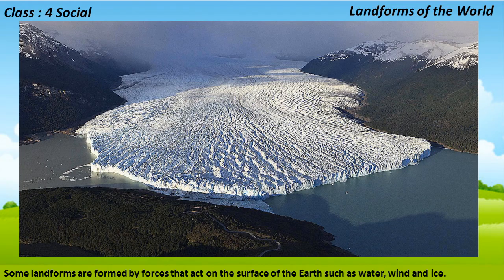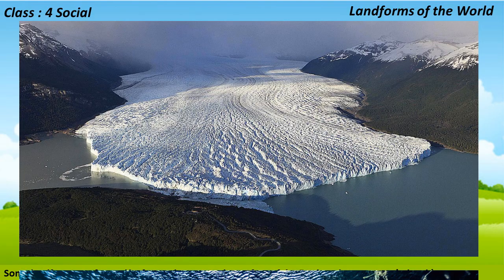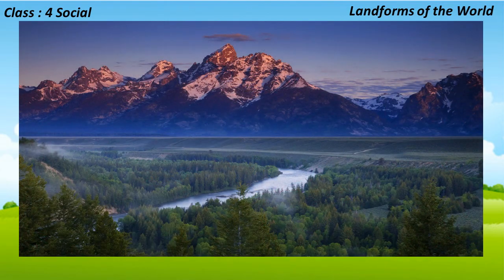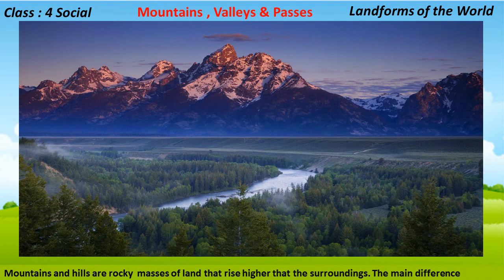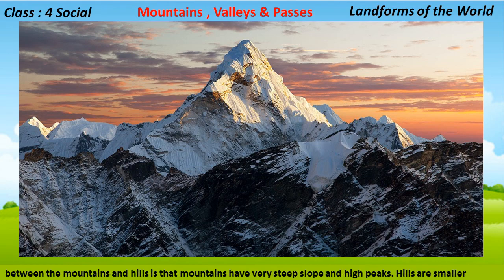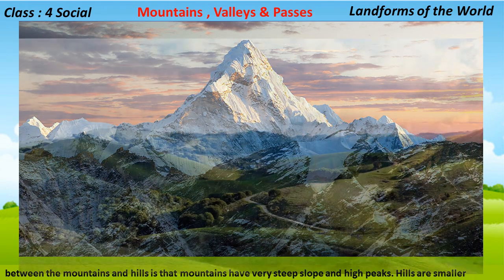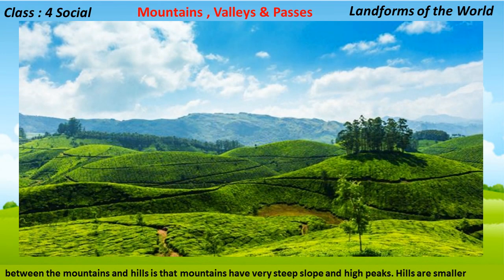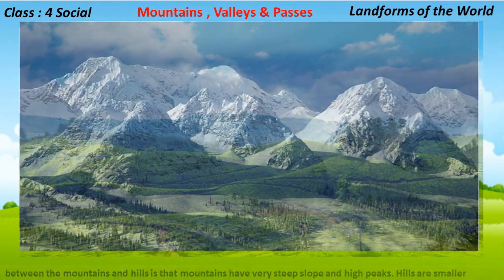Some landforms are formed by forces that act on the surface of the earth, such as water, wind, and ice. Some are formed by processes deep inside the earth. Mountains and hills are rocky masses of land that rise higher than the surroundings. The main difference is that mountains have very steep slopes and high peaks, while hills are smaller and lower.